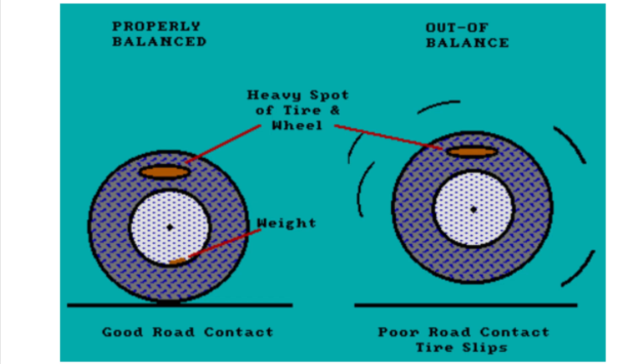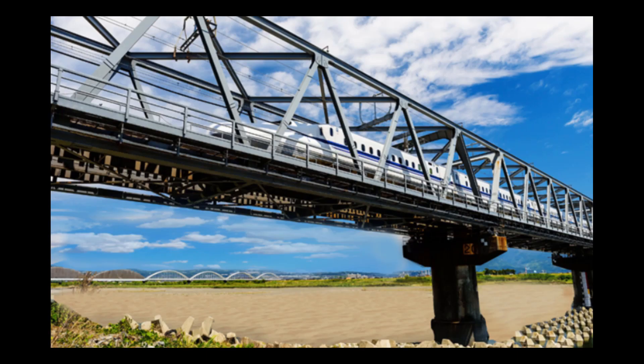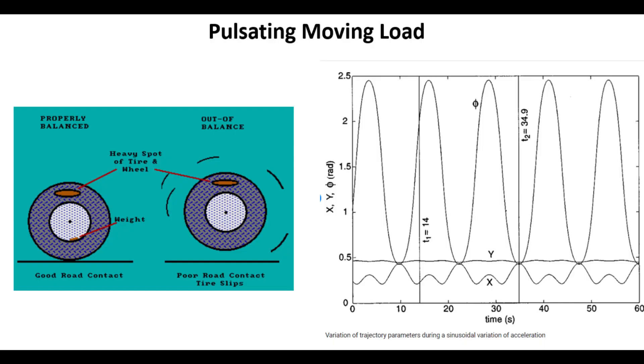Generally, higher the speed, the more vibration can be perceived. The point of application of the dynamic force changes its position as the vehicle moves forward. The interest of an engineer is to capture the dynamic response of the structure due to this pulsating moving load on the bridge. This pulsating force imparts vibration or dynamic force at some regular interval — it could be harmonic or non-harmonic. Assuming the vehicle moves at a constant speed, an unbalanced mass in the wheel or axle causes pulsating forces at regular intervals.